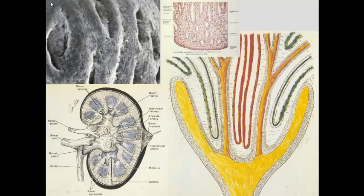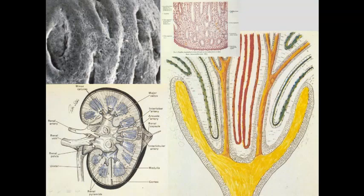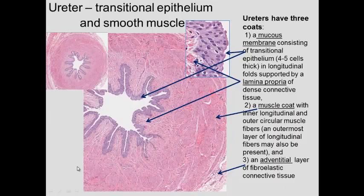You have these papillary ducts opening up into transitional epithelium. Transitional epithelium will be in the minor calyx, then it goes to the major calyx, then to the pelvis, and then out through the ureter.